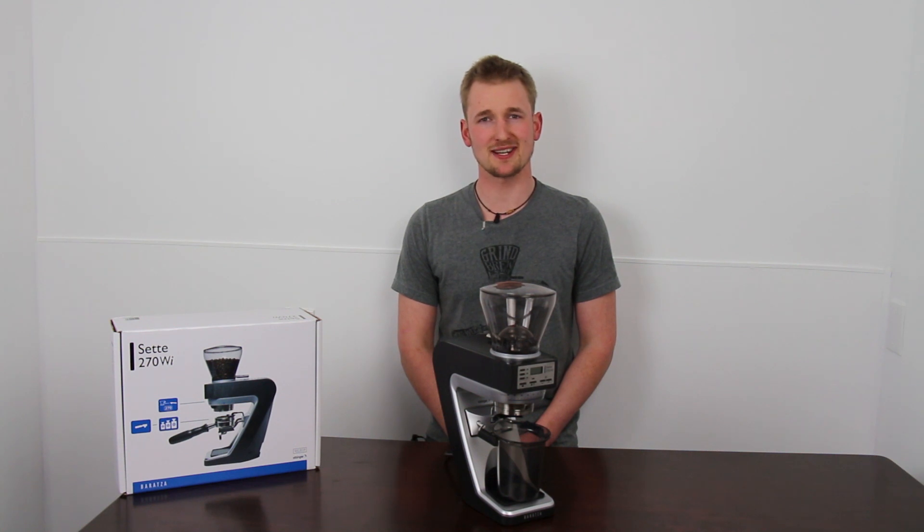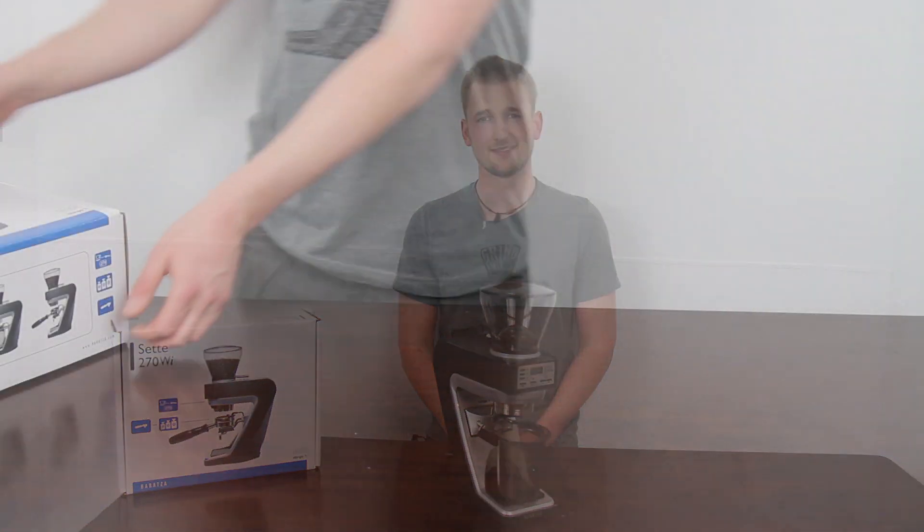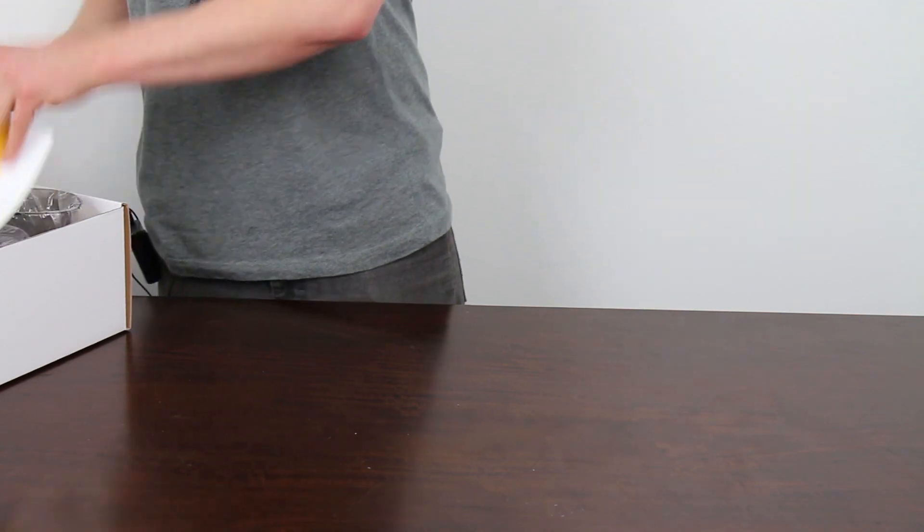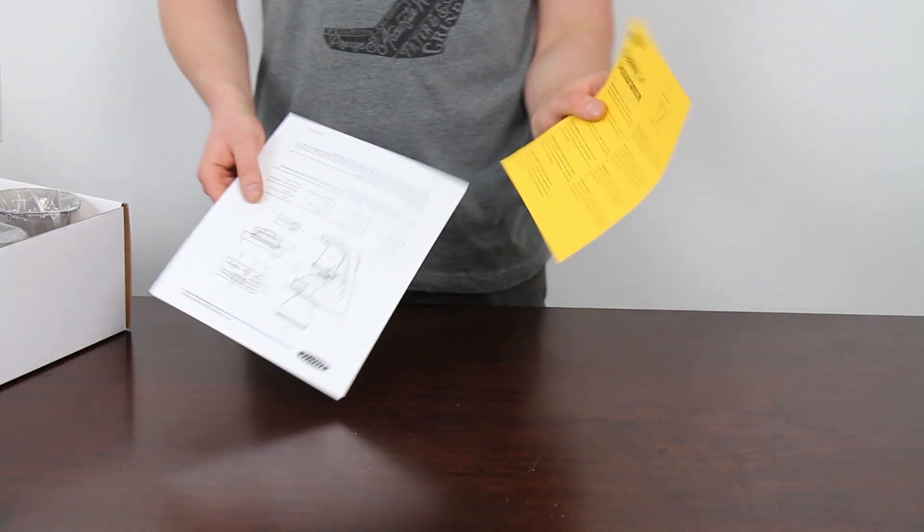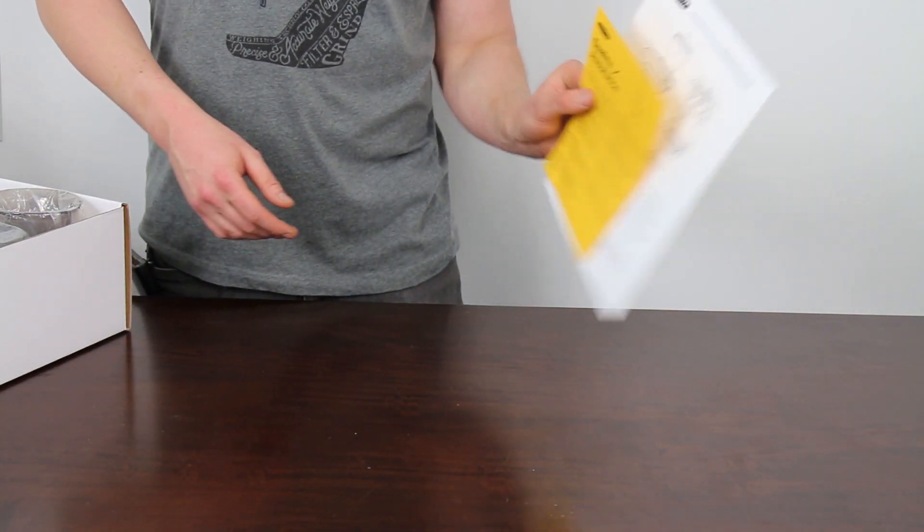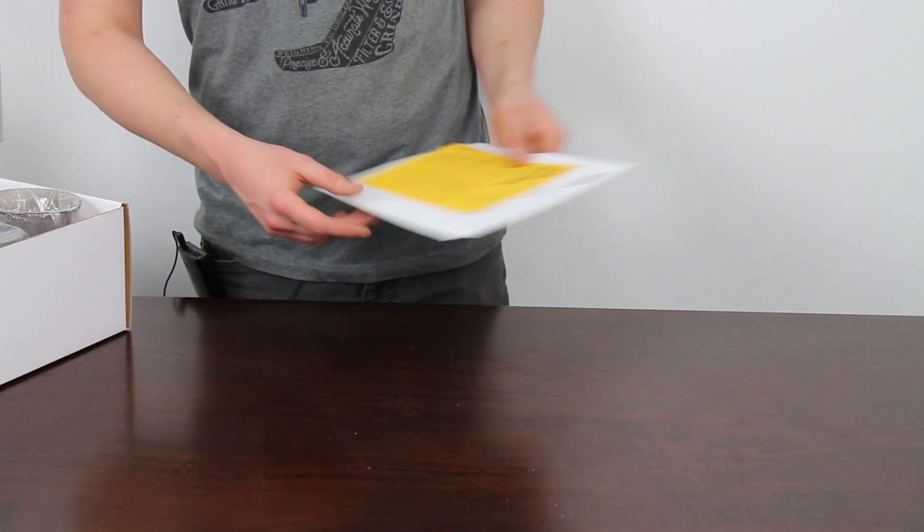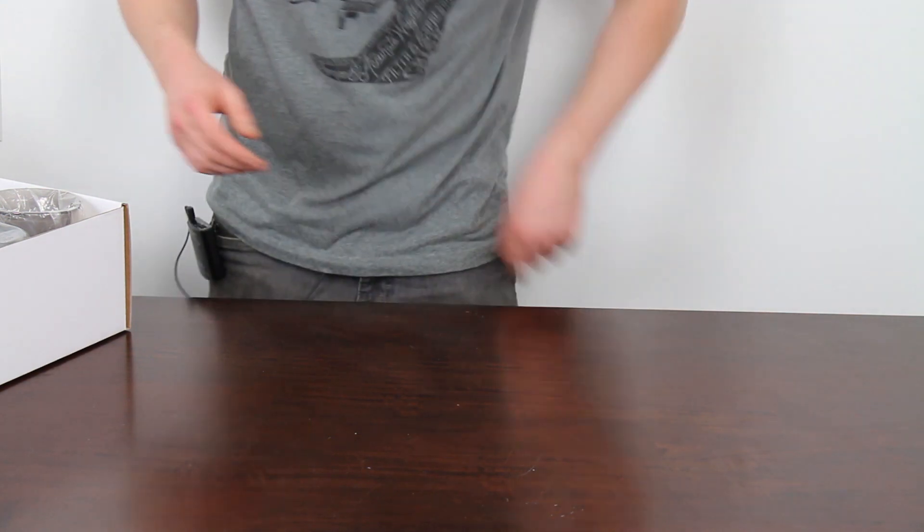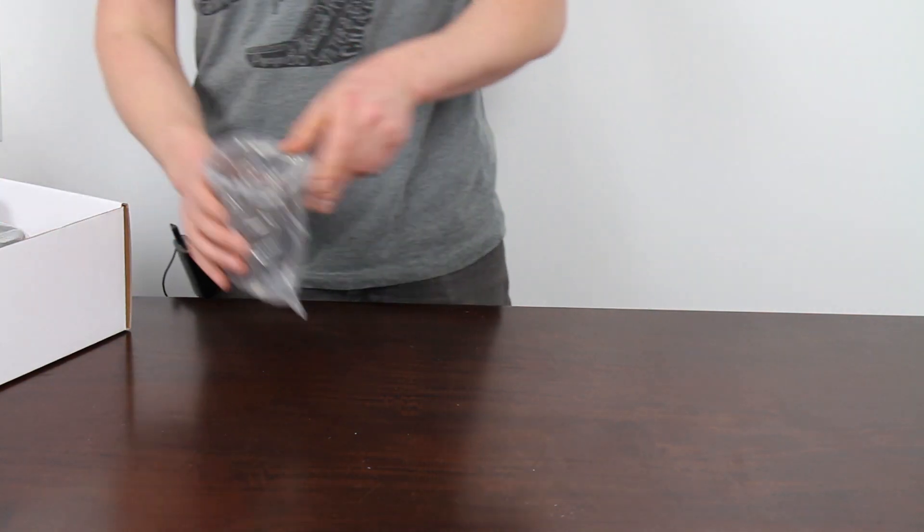Alright, let's open up the box and set this grinder up. Upon opening the box, the first thing you're going to run into is some paperwork. We have a quality assurance slip and we have the quick start guide. We'll go ahead and put this paperwork to the side and get to the exciting stuff right away.